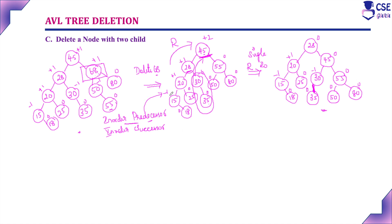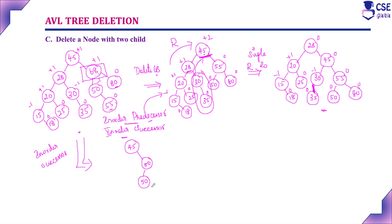Now, if instead we apply the in-order successor: the in-order successor is the smallest element in the right subtree. The right subtree has only one element, so obviously that element replaces 68. So 45 remains the root node, 80 occupies the position of 68, 50 becomes its left child, and 55 becomes its right child. The left subtree elements remain completely unchanged.